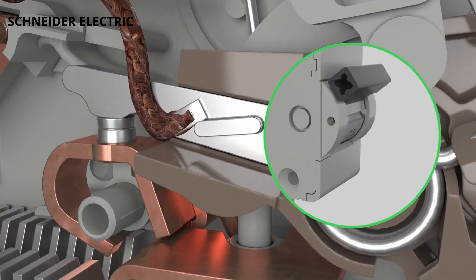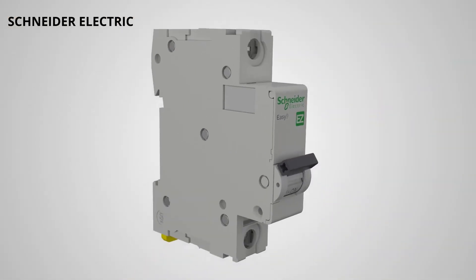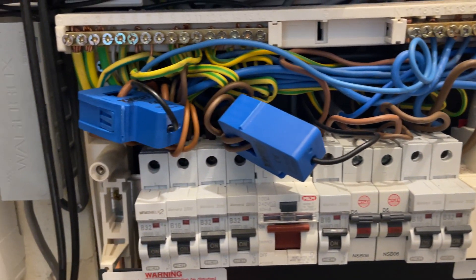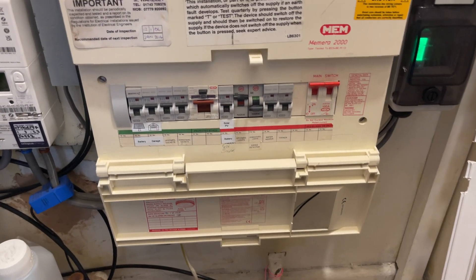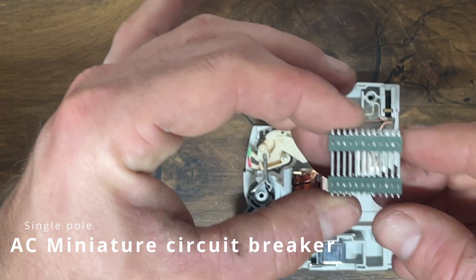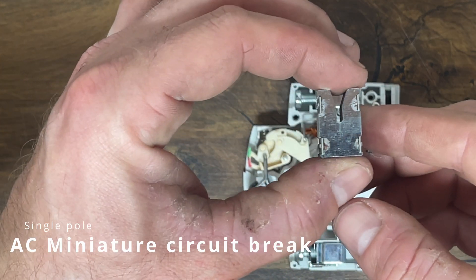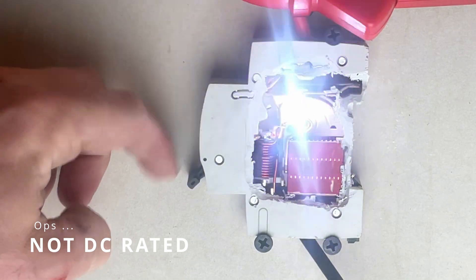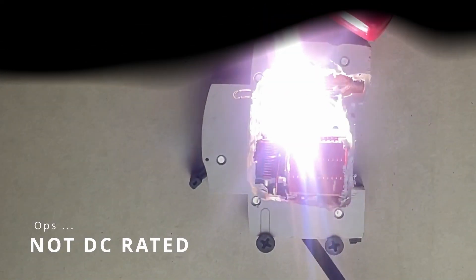So how do they work, and how are they mechanically different depending on the type of MCB? We're going to look at a simple single pole MCB, taking it apart and looking at all of its components, and of course, using it outside of its spec to see what happens.